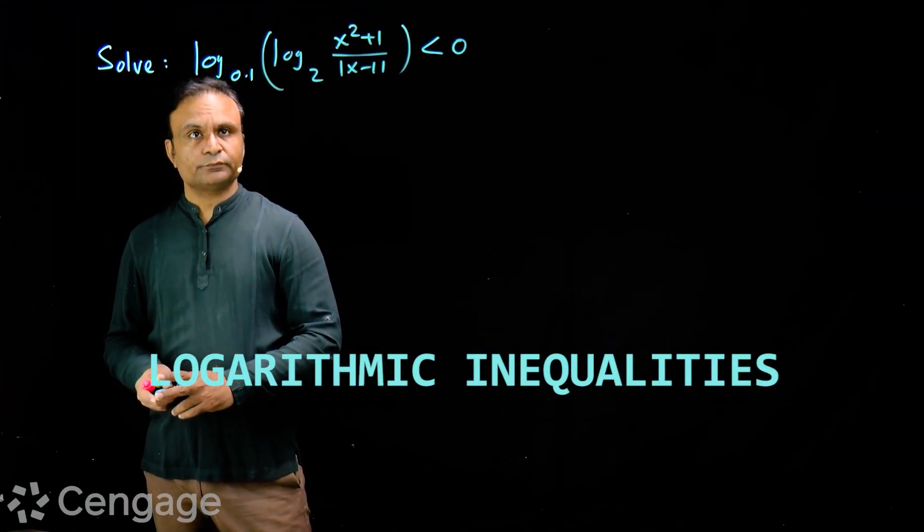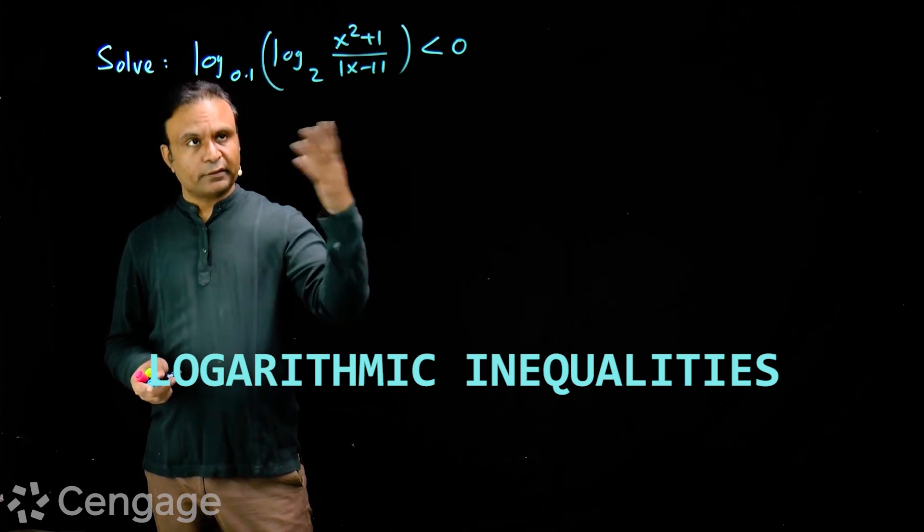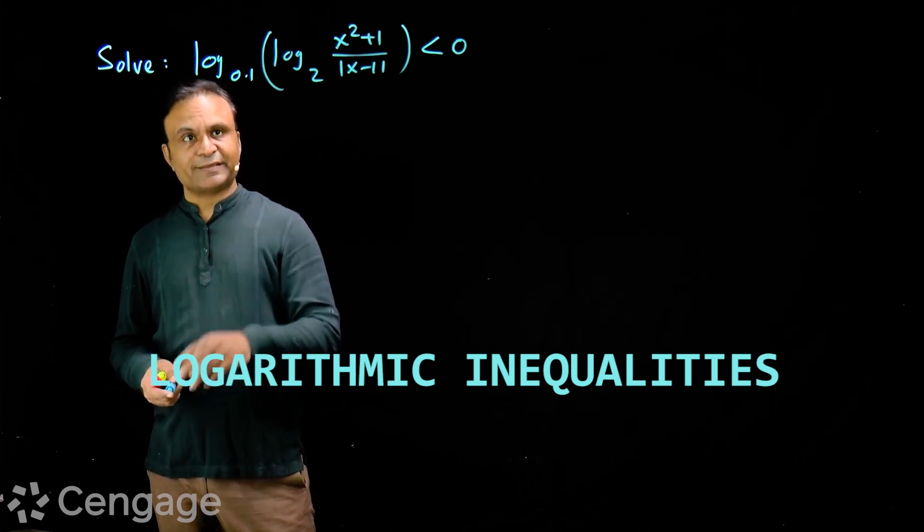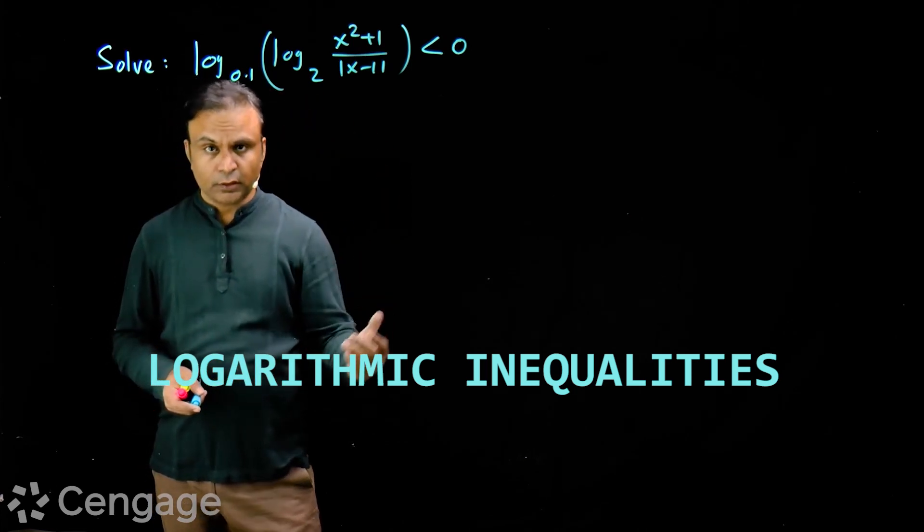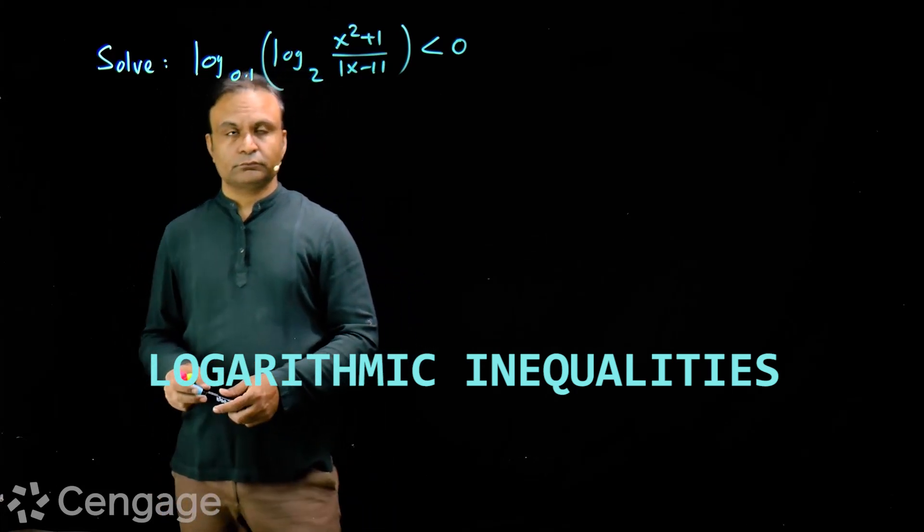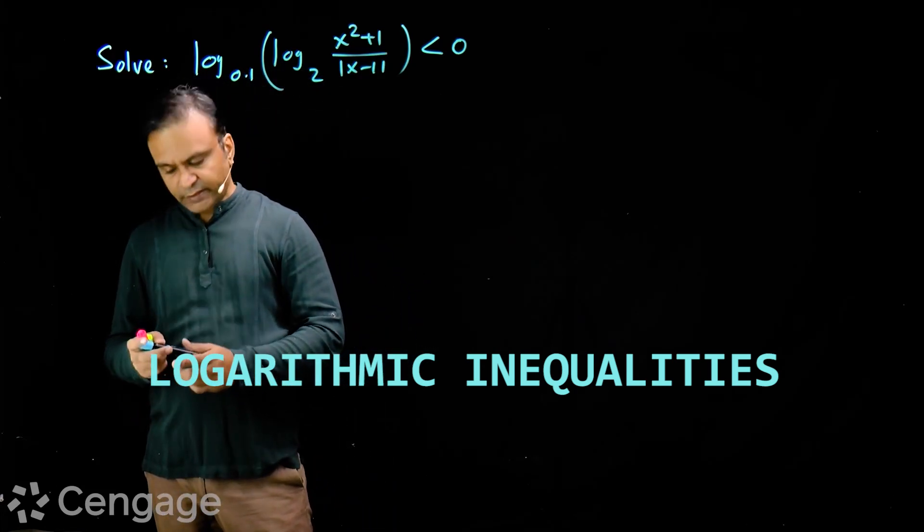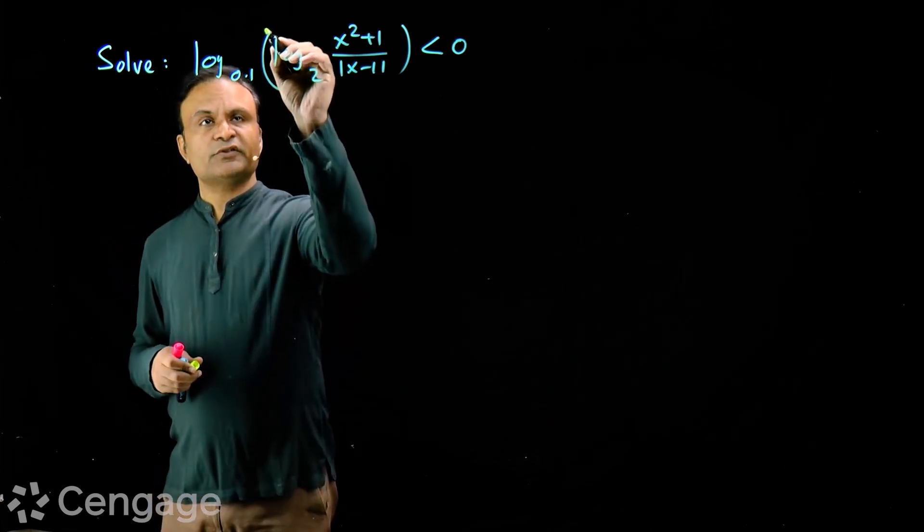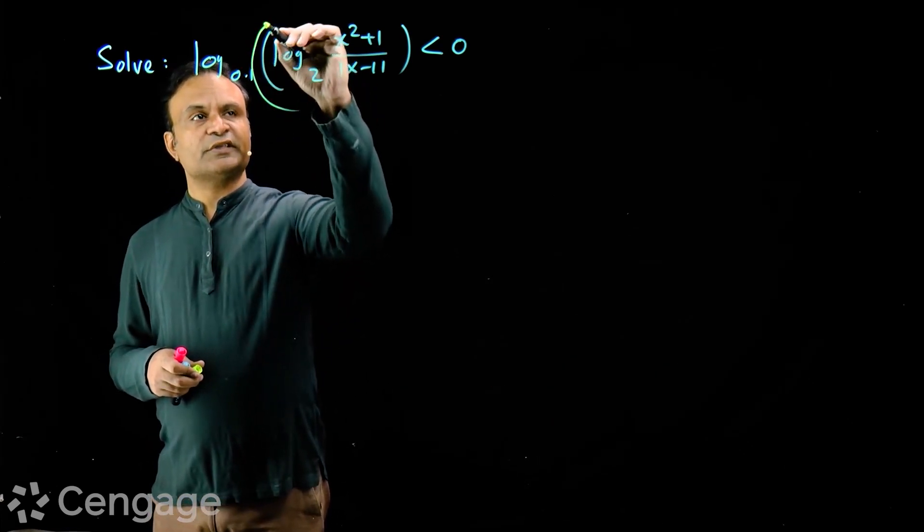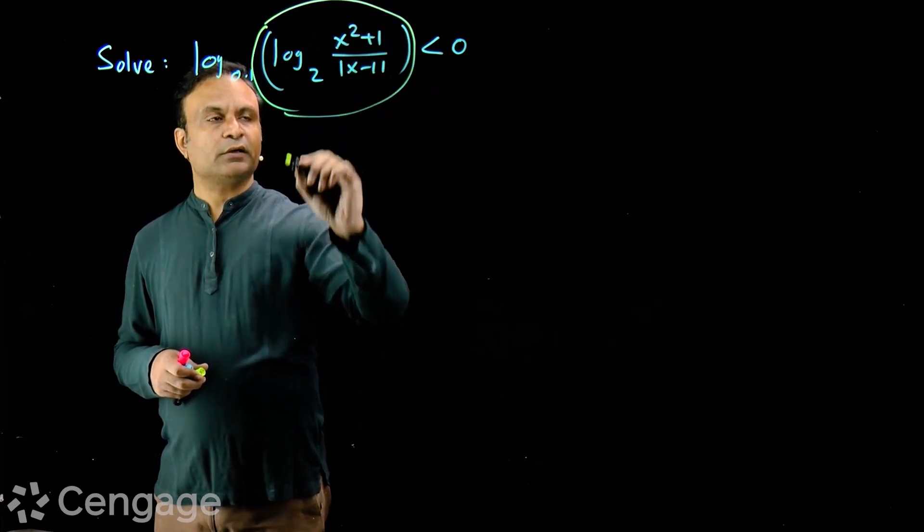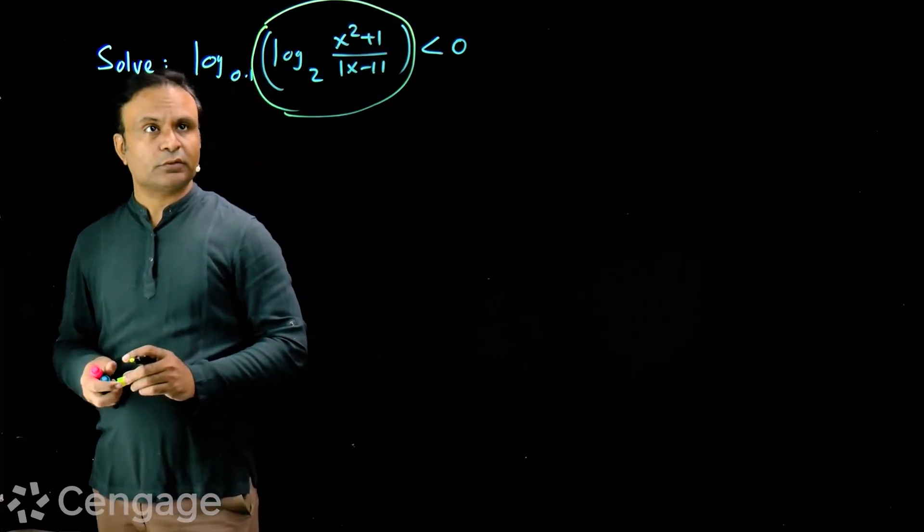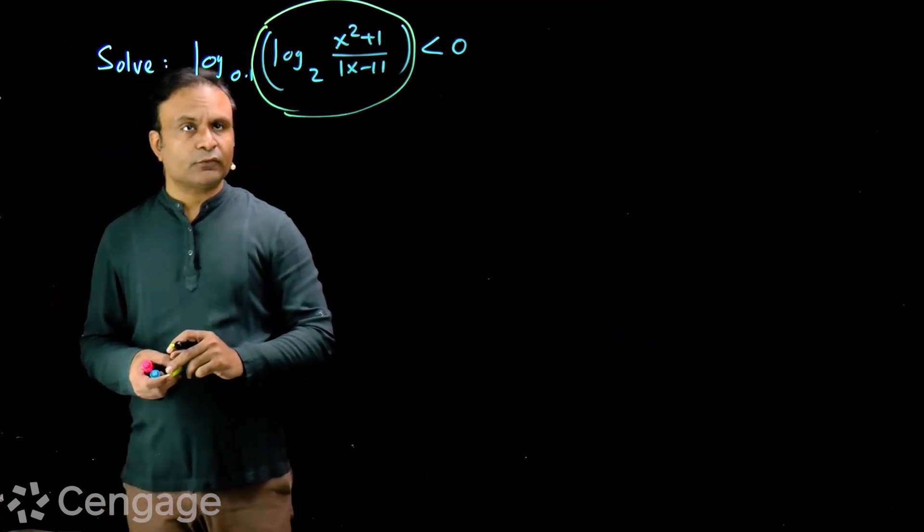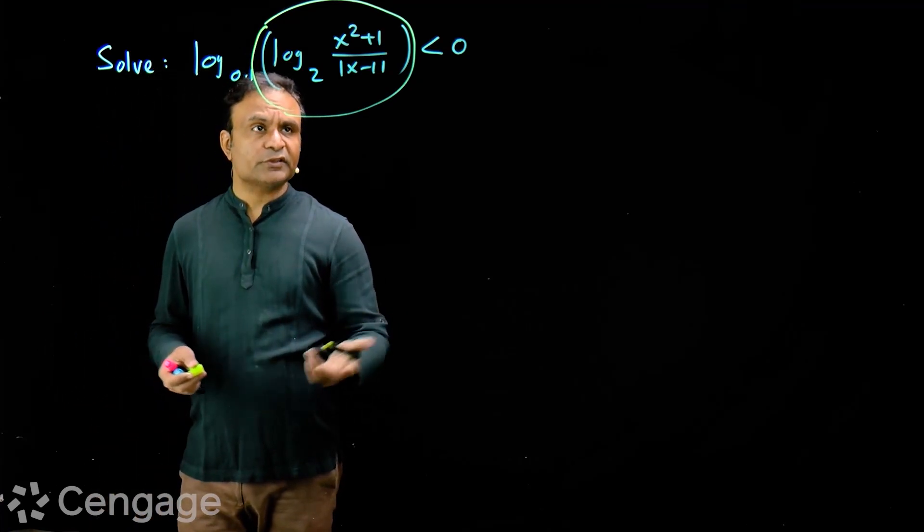Solve this inequality. Log function has one base less than 1 and one base more than 1. First of all, log of this expression to the base 0.1 is less than 0. Base of logarithm for this is 0.1 which is less than 1.